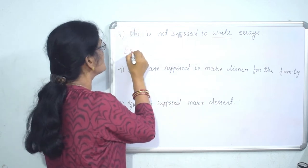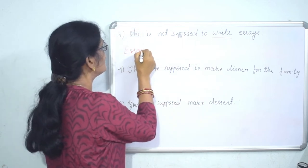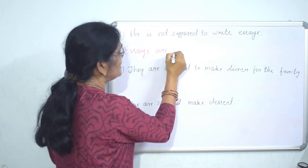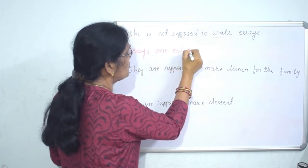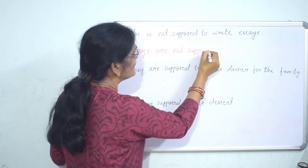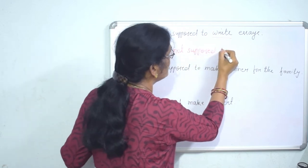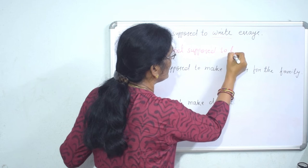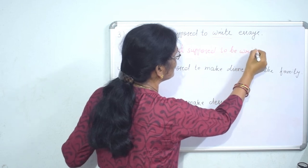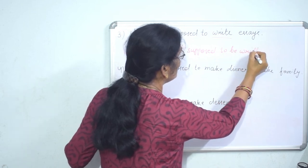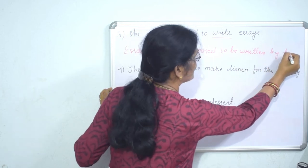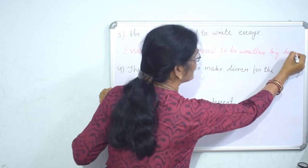Next: 'She is not supposed to write S's.' The verb is 'write' — write what? S's. So: 'S's are not supposed to be written by her.'